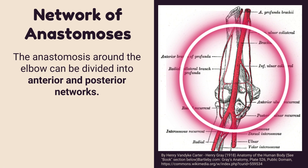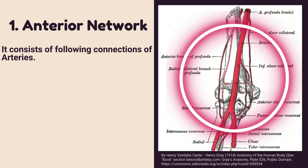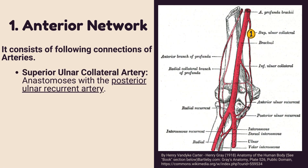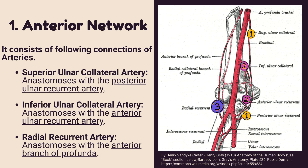The anastomosis around the elbow can be divided into anterior and posterior networks. The anterior network consists of the following connections: the superior ulnar collateral artery anastomoses with the posterior ulnar recurrent artery; the inferior ulnar collateral artery anastomoses with the anterior ulnar recurrent artery; and the radial recurrent artery anastomoses with the anterior branch of the profunda brachii.